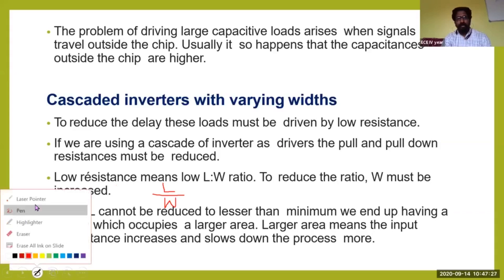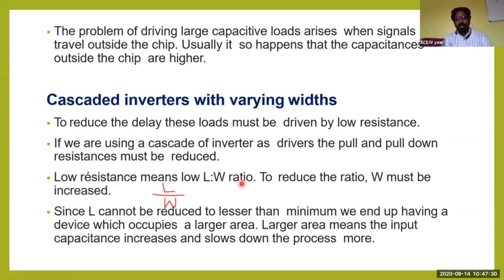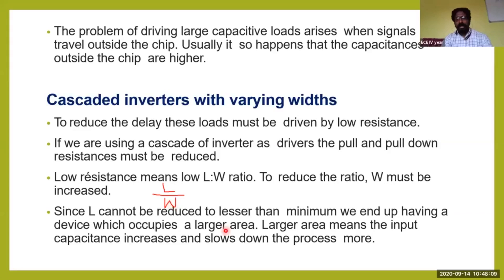To have lower resistance circuits, we should have low L-by-W ratios, so W must be increased. L cannot be reduced below the minimum value as per the technology node, so we end up with a device that occupies a larger area. We cannot reduce L, so we go with increasing the width. A larger area means the input capacitance increases and it slows down the process more.